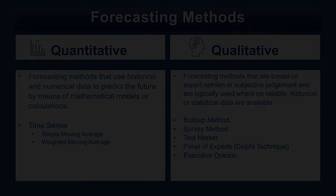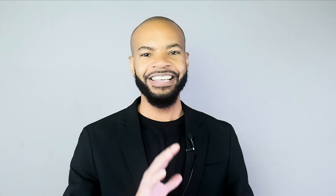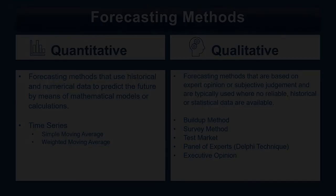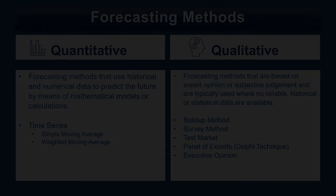Key takeaways: there are two forecasting methods — qualitative and quantitative. Quantitative methods are best when you have accurate historical data, though they may not work well for industries like real estate or automotive where conditions fluctuate significantly. Qualitative methods — the build-up method, survey, test market, Delphi technique or panel of experts, and executive opinion — are used when you lack historical data or operate in a highly variable industry.